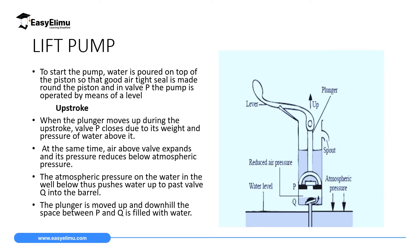The second application is a lift pump. A lift pump has specific parts: we have a plunger, and we do upstrokes and downstrokes by holding the lever. We have a spout where the liquid moves out, valve P, and valve Q. Then we have the space between valve P and valve Q.